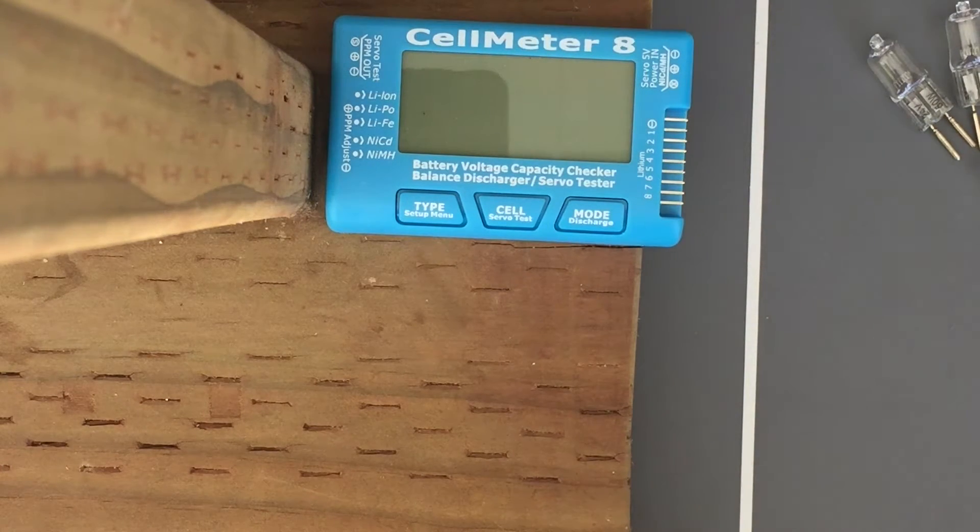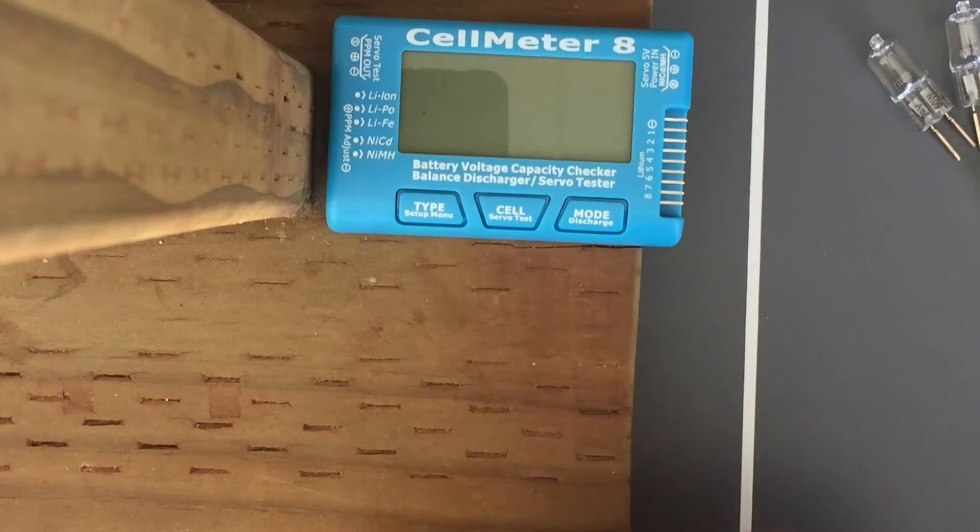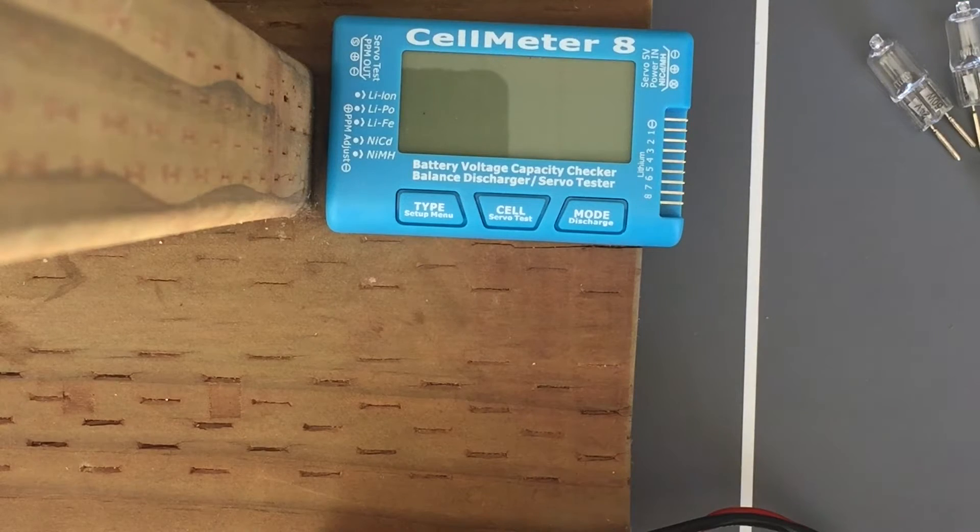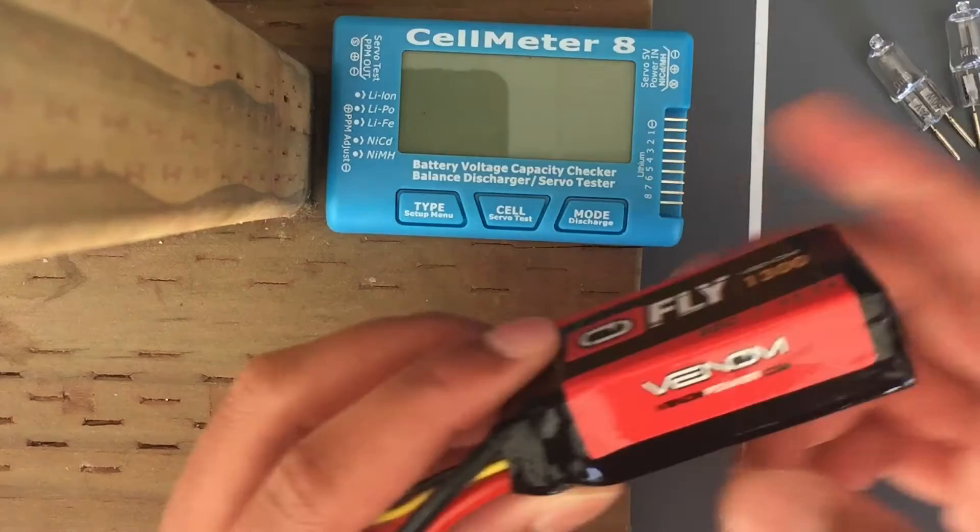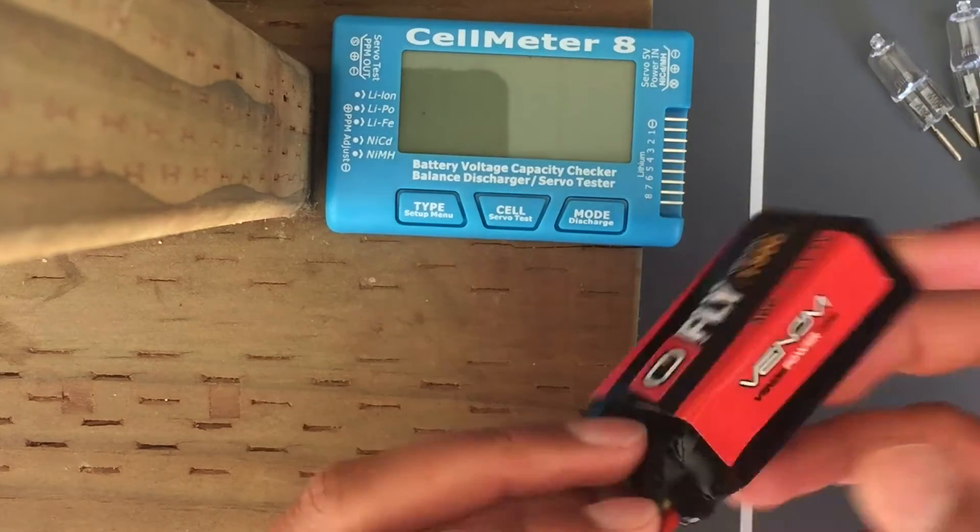For LiPo batteries or any sort of batteries, it's important to keep them at a storage charge. A storage charge is a voltage where you can keep the battery for long periods of time without getting ruined. If you keep the battery at too high or too low of a voltage, the battery would get ruined, maybe puffing up and getting destroyed.